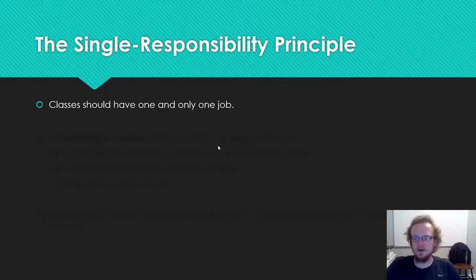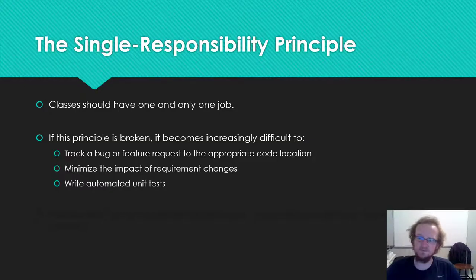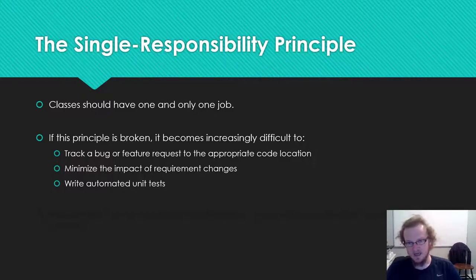The idea behind Single Responsibility is straightforward: if you have a class, that class should do one and only one job. If you think about the consequences of breaking this principle — once a class has two, three, four, or five jobs — it becomes really difficult to take a bug and figure out which class it belongs to, even if it's a printer spooling bug, because the bug could be in a class that implements a whole bunch of different functionality for the printer driver.